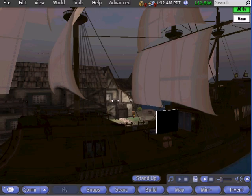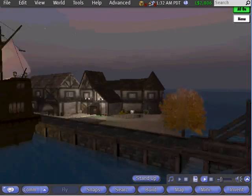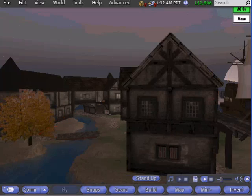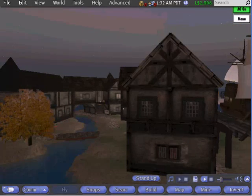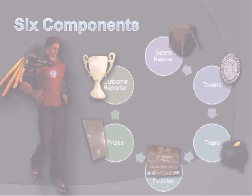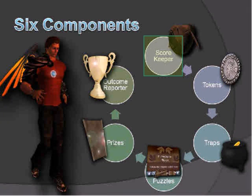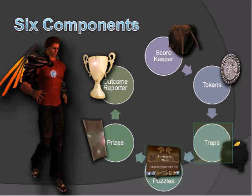Throughout this tutorial, I'll show you examples of the Game Kit in action and show you how you can customize each component. At its heart, the Game Kit is a collection of six common elements found in adventure-style 3D games. These are the Scorekeeper, Tokens, Traps, Puzzles, Prizes, and Final Score Reporting.